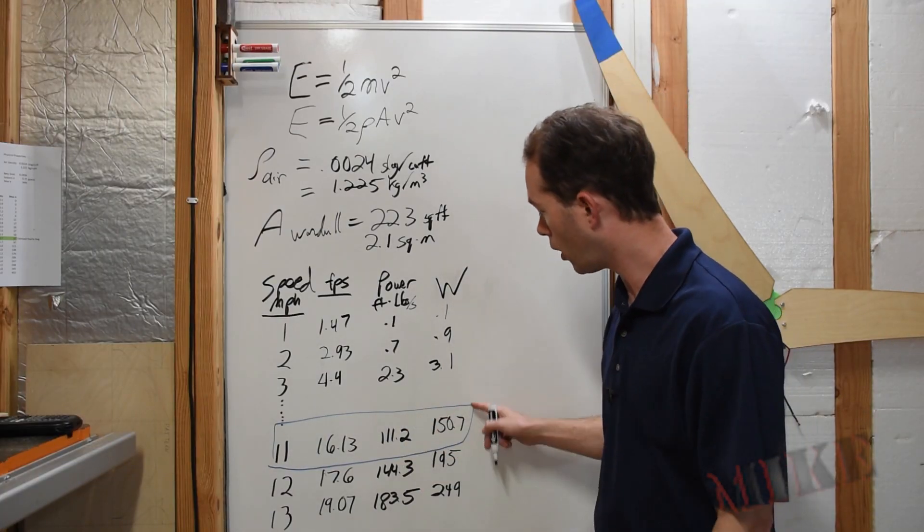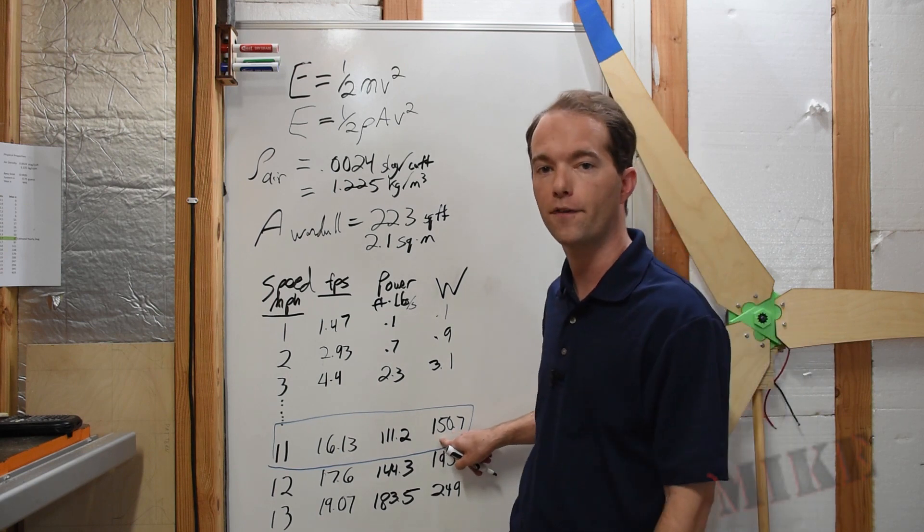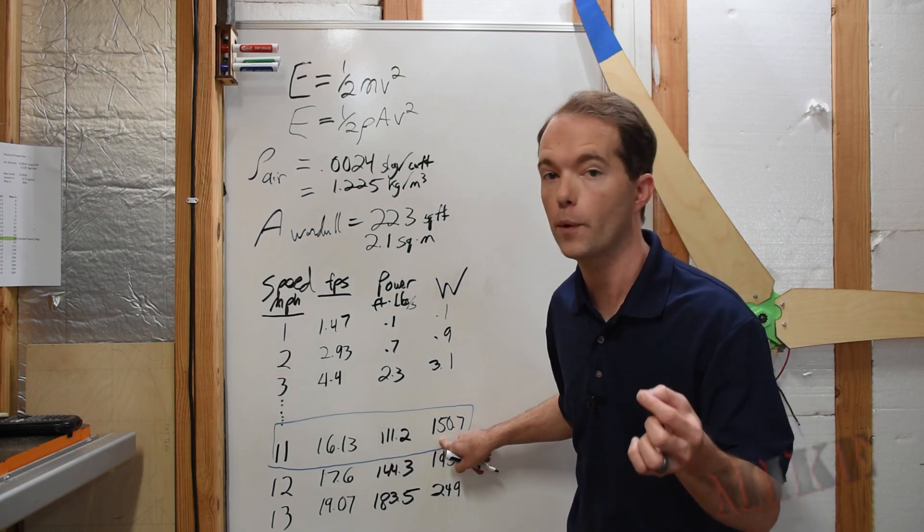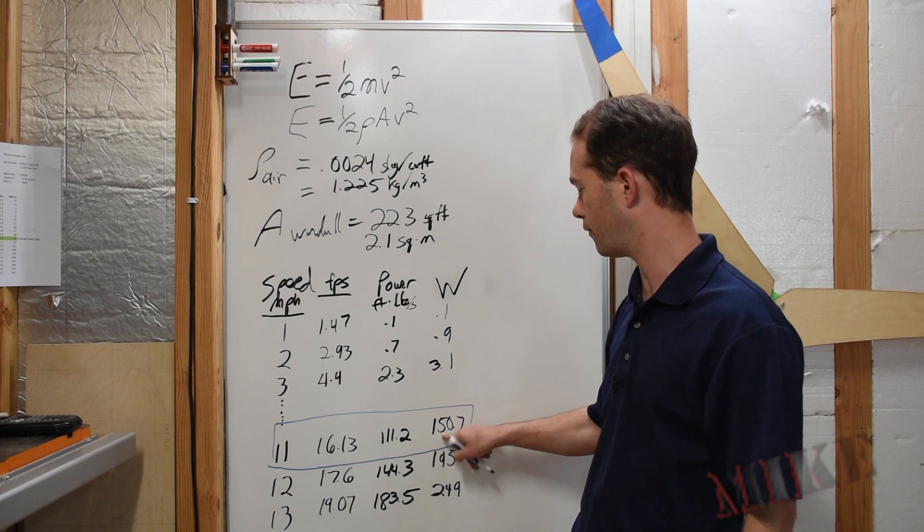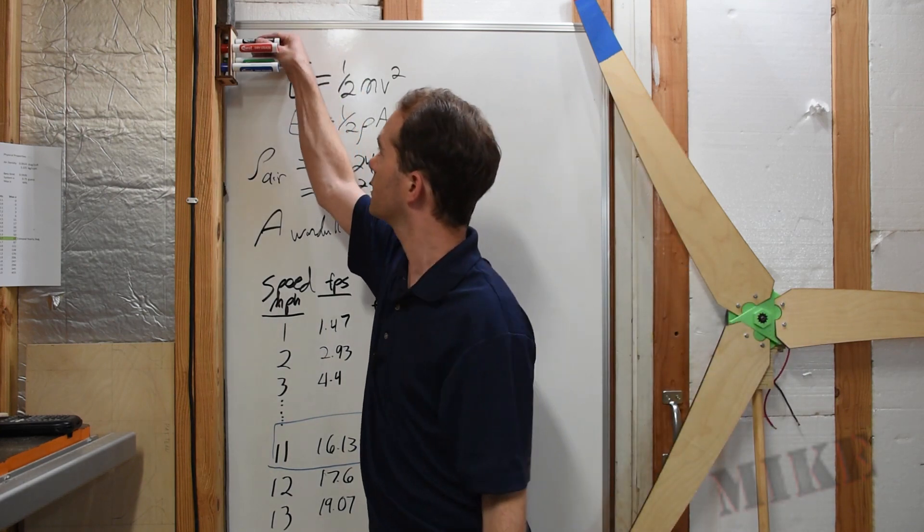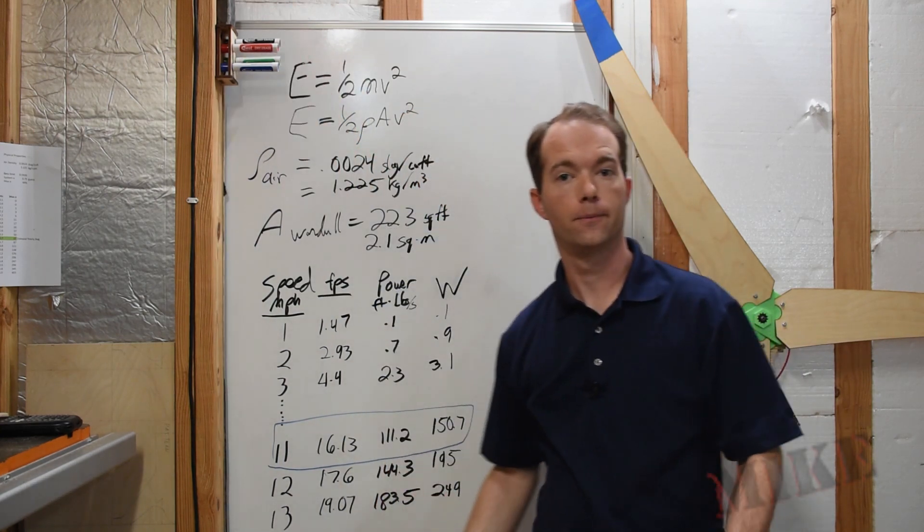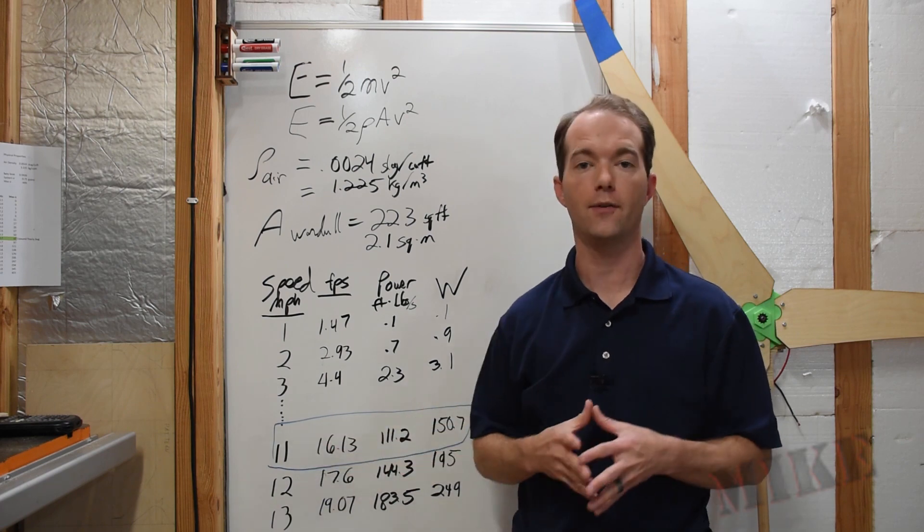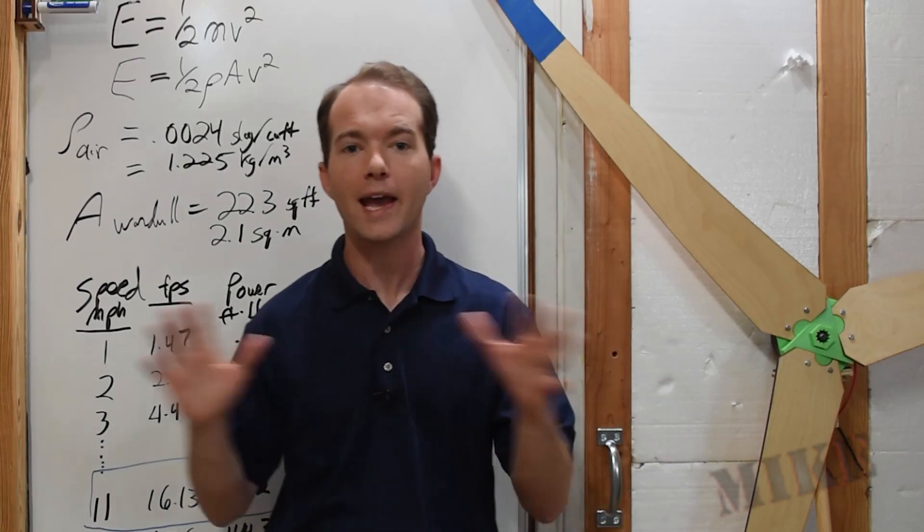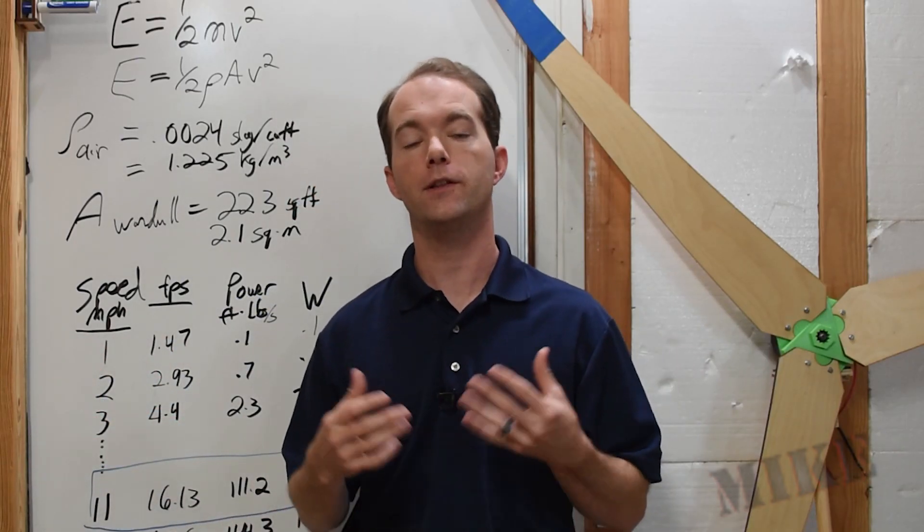You can see here, we can only get 150, well, there are 150 watts in that amount of air flowing at an average of 11 miles per hour. You can't extract all of the energy that's in the wind.